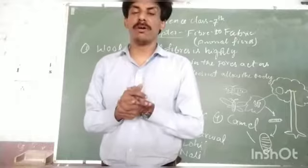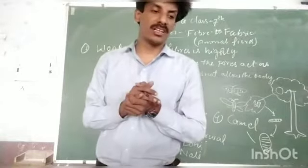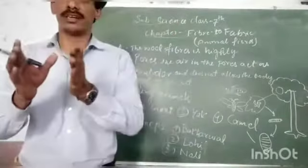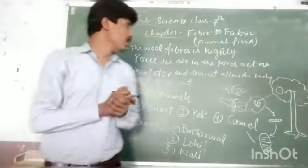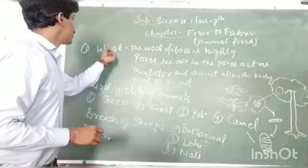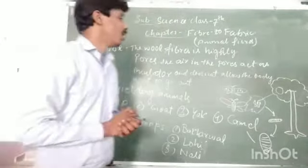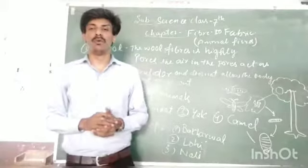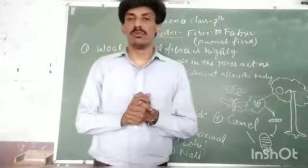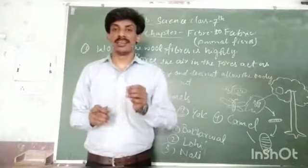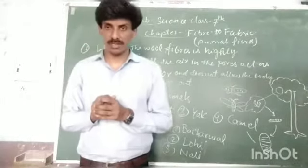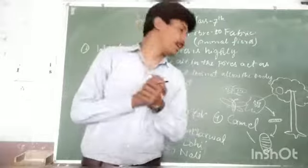Now we discuss our new topic: fiber to fabrics, all animal fibers. The first topic is wool. What is wool? Wool is obtained by wool yielding animals. What are wool yielding animals? Yak, angora goats are wool yielding animals.